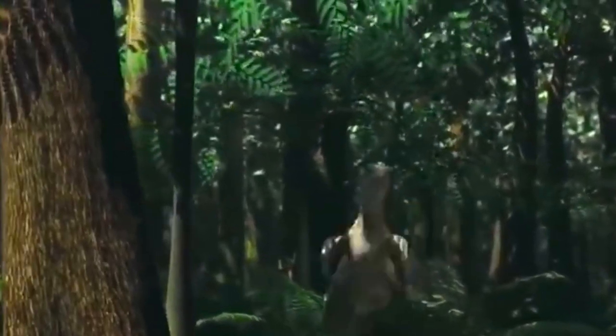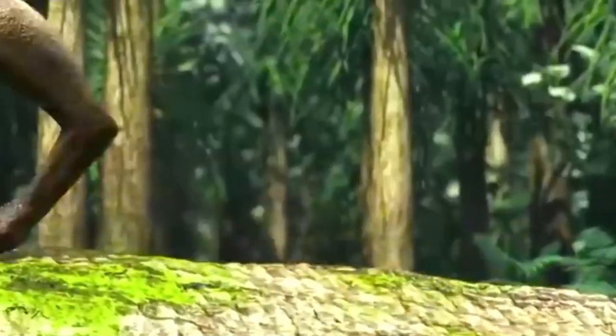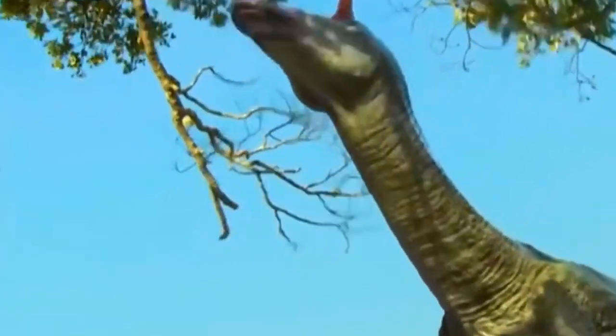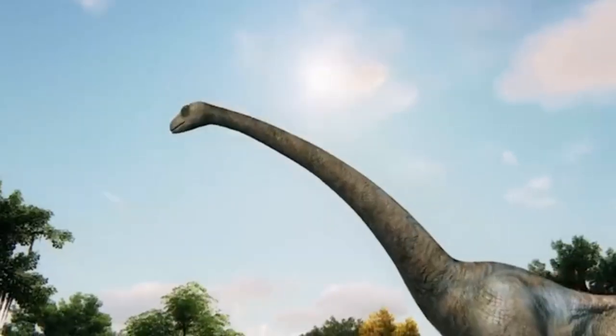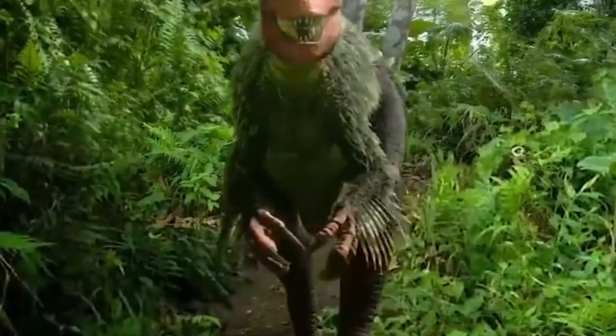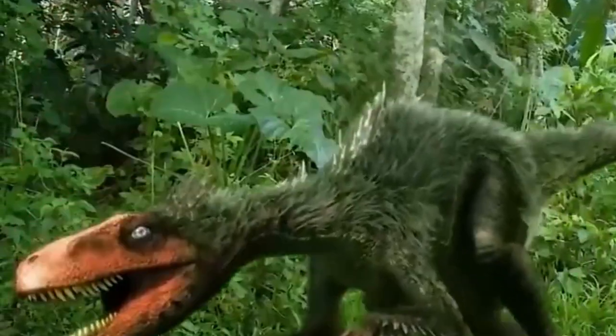The Mesozoic Era is divided into three distinct periods, the Triassic, Jurassic, and Cretaceous. During the Triassic, the first dinosaurs emerged, evolving from their reptilian ancestors. However, it was the Jurassic and Cretaceous periods that witnessed the zenith of dinosaur diversity and dominance.